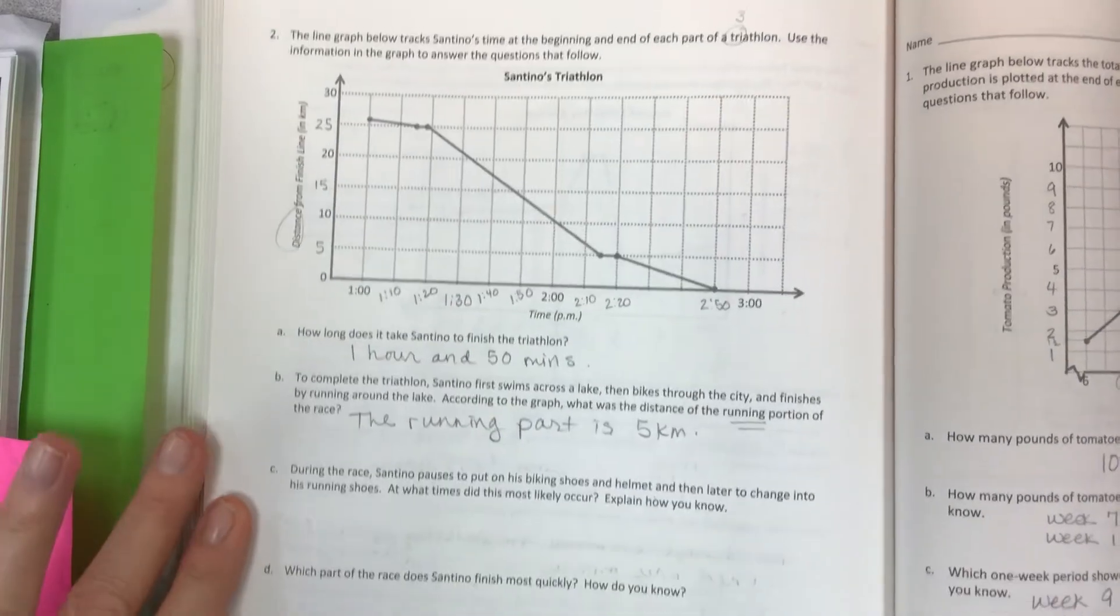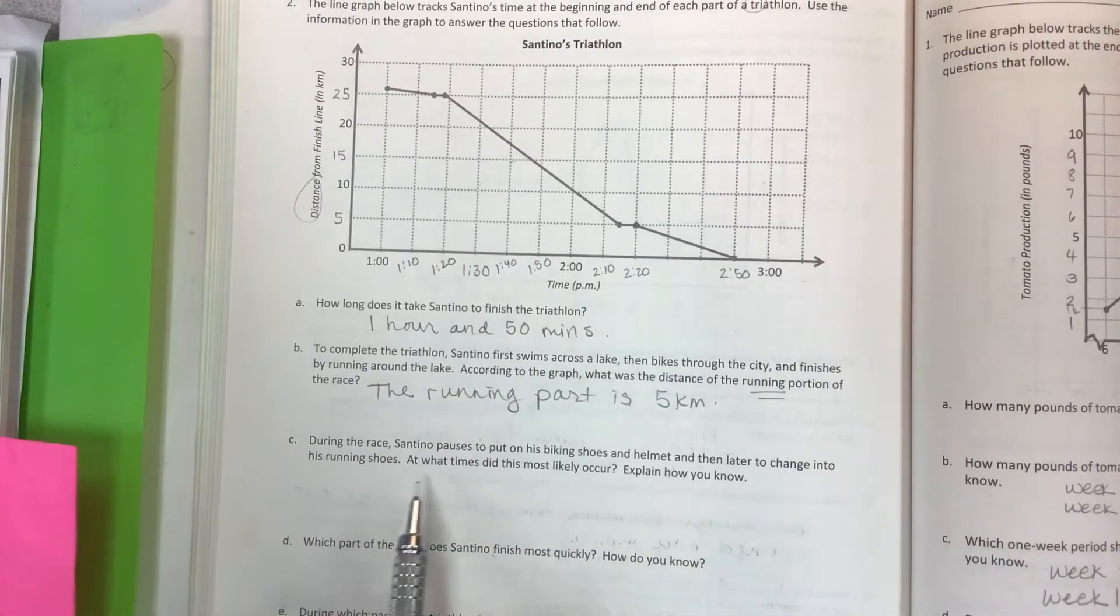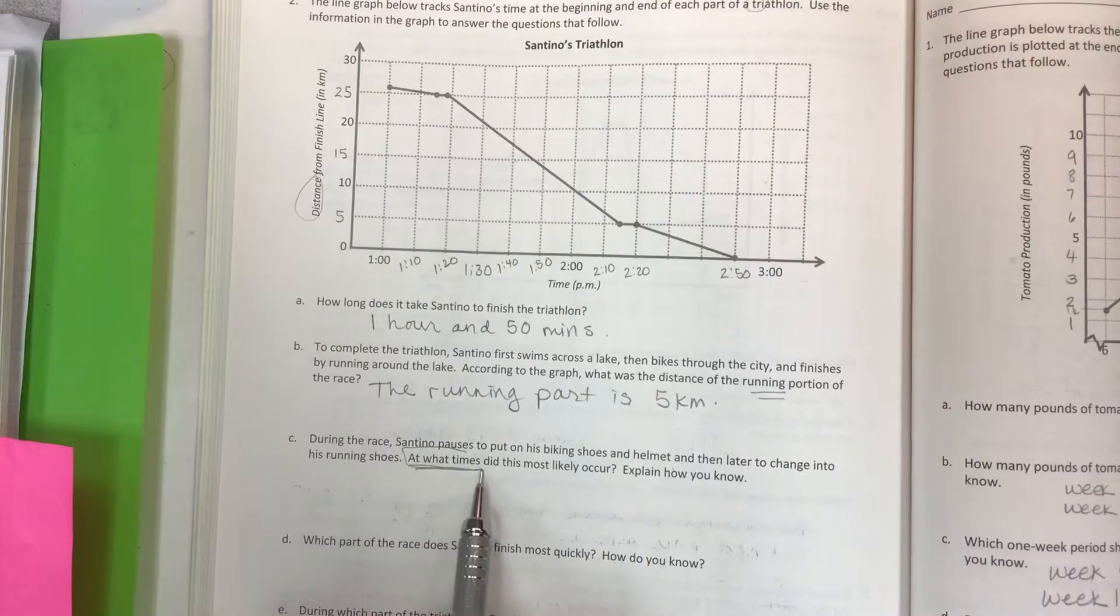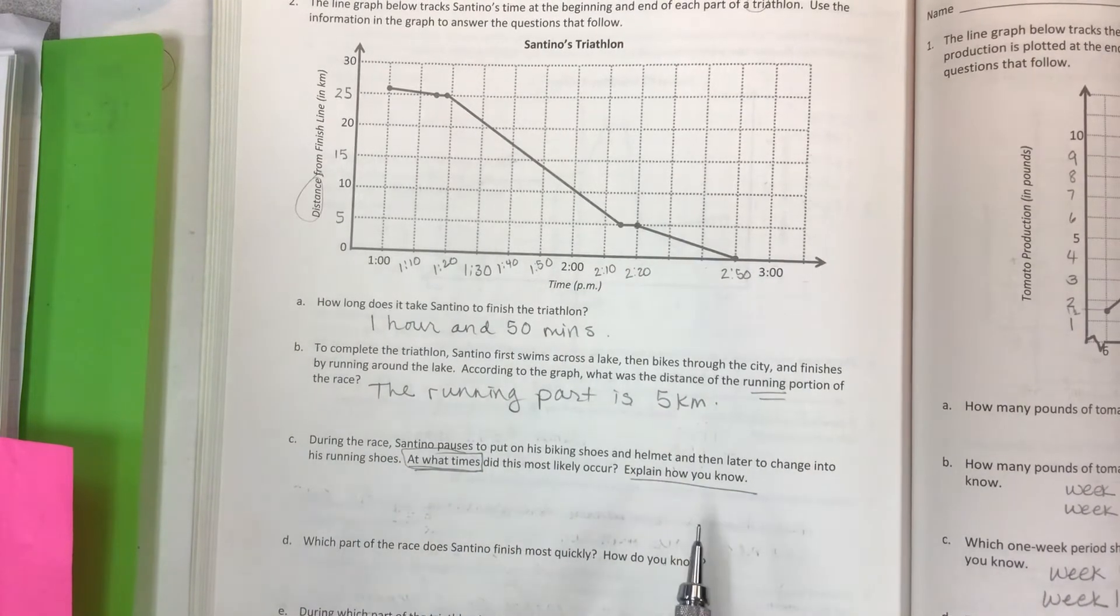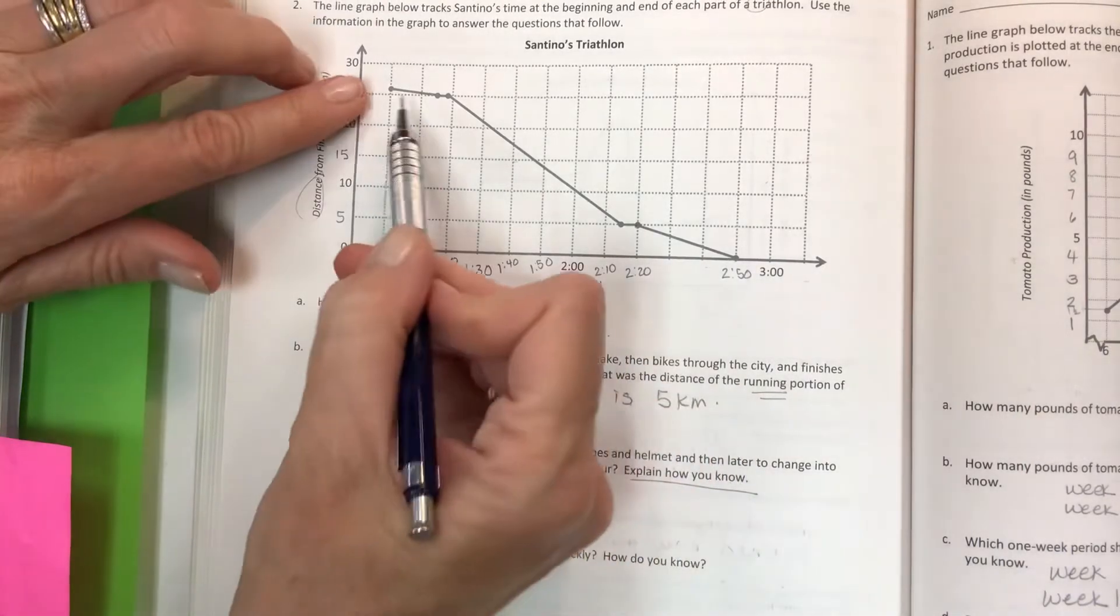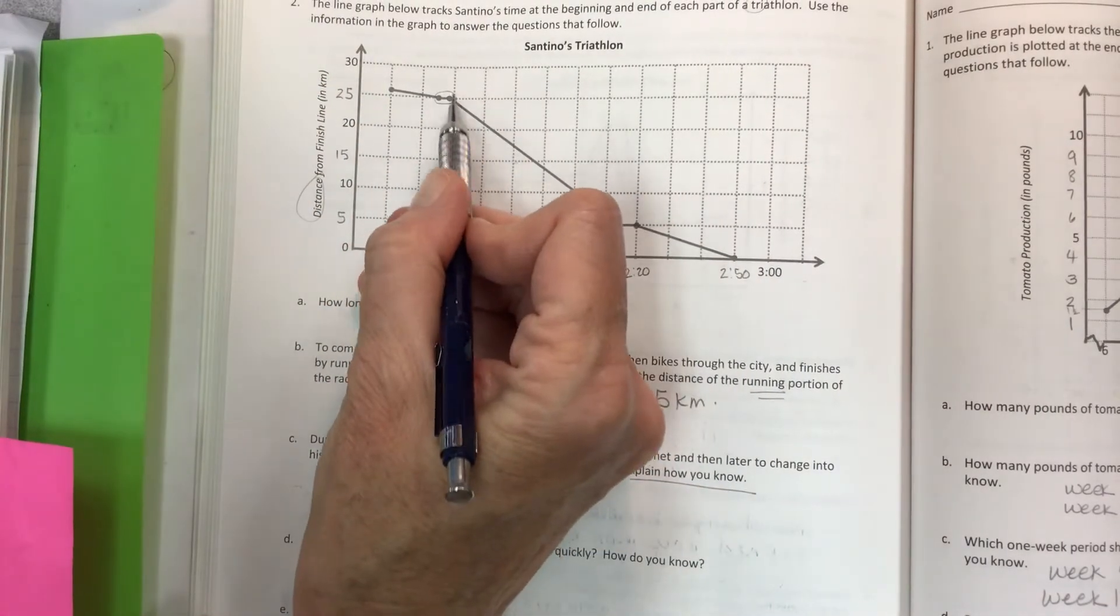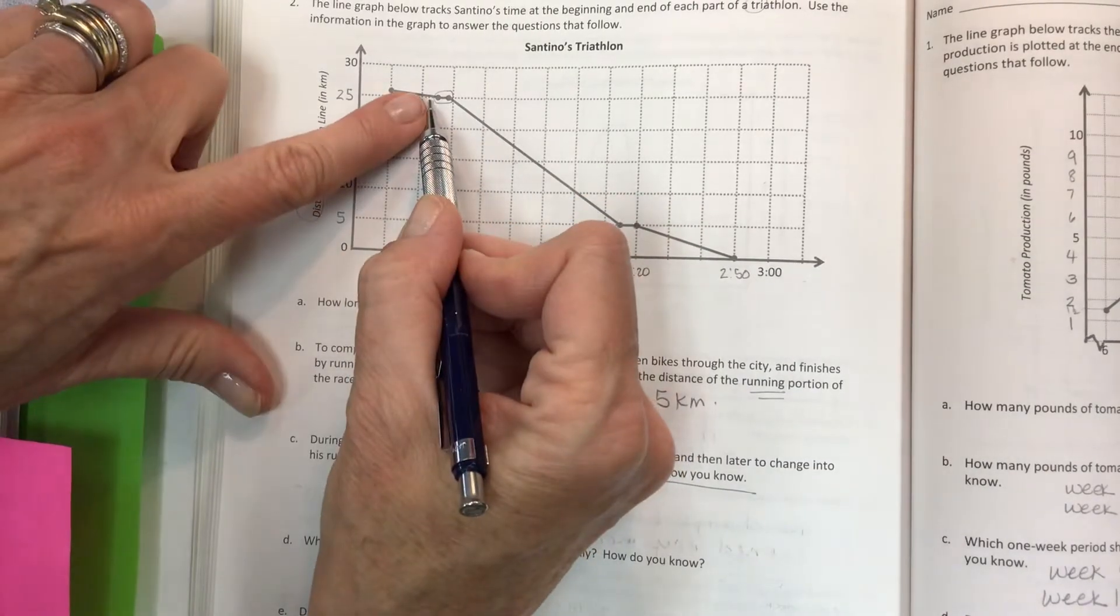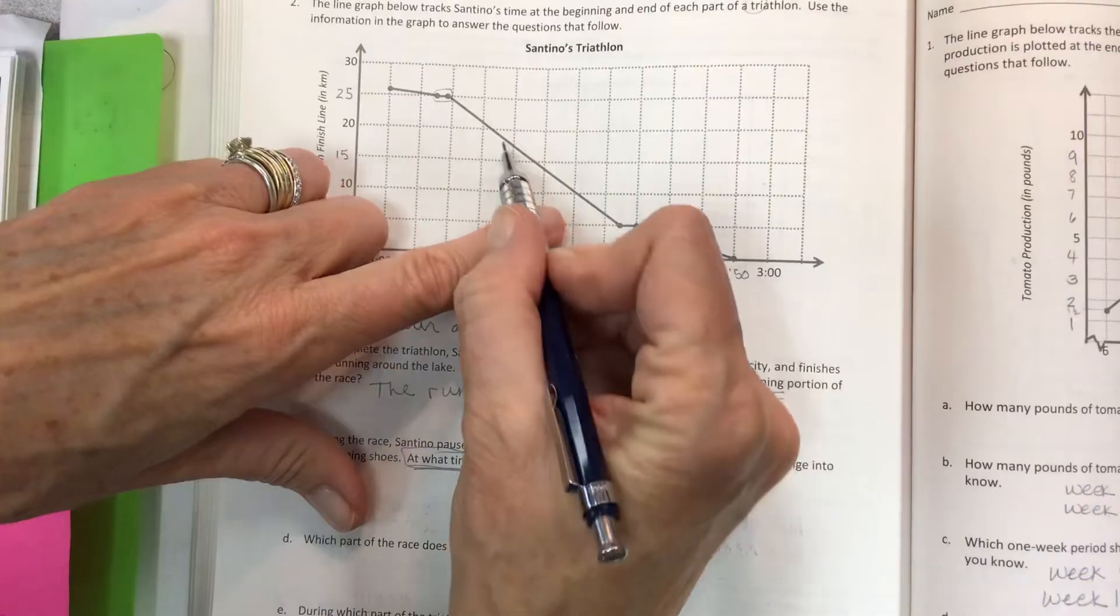During the race, Santino pauses to put on his biking shoes and helmet and then later to change into his running shoes. At what times did this most likely occur? And then explain how you know. If he's moving toward the finish line, then the line goes down. So he's swim, swim, swimming. Right here, that is when he's getting out of the swim clothes and into the bike shoes and helmet. Bike, bike, bike. Pull up. Get out, or get off your bike.